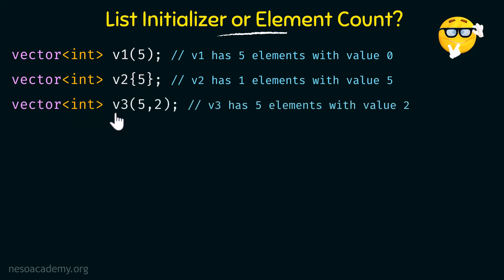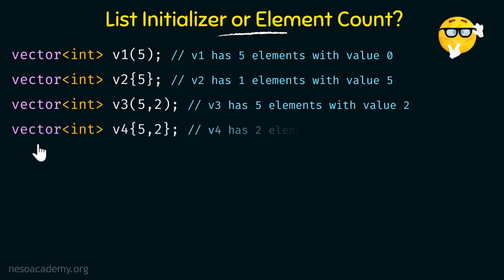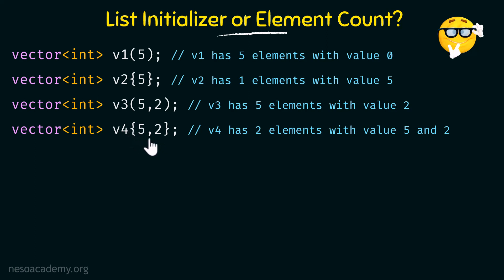Next, vector v3 of type integer with 5 comma 2 in rounded brackets — v3 has 5 elements each initialized to the value 2, so 2 is stored 5 times. Then vector v4, also an integer vector, with 5 and 2 enclosed in curly braces — in curly braces these are a list initialization, meaning elements 5 and 2 are stored in v4. So v4 has just two elements with values 5 and 2.